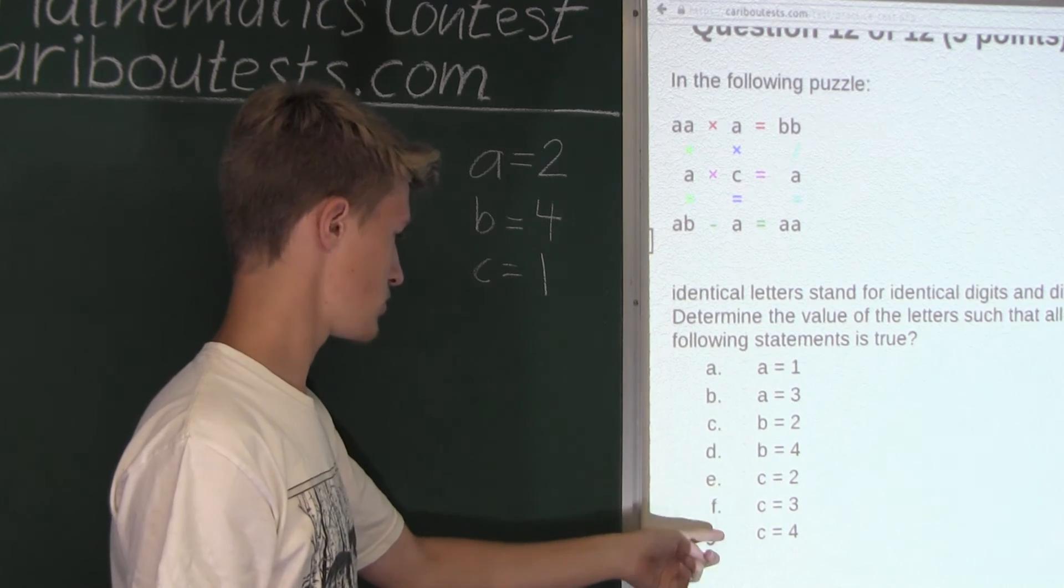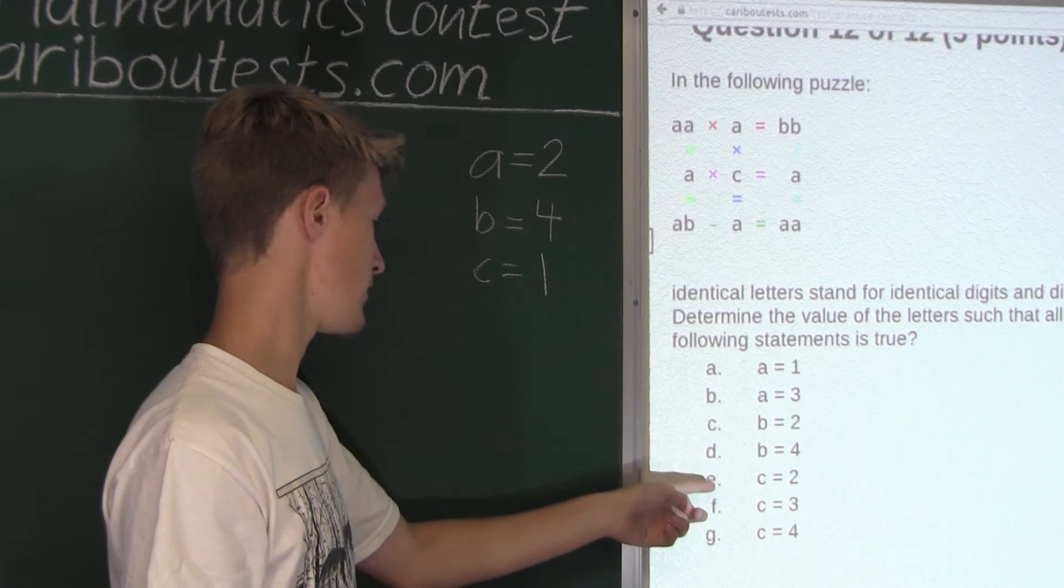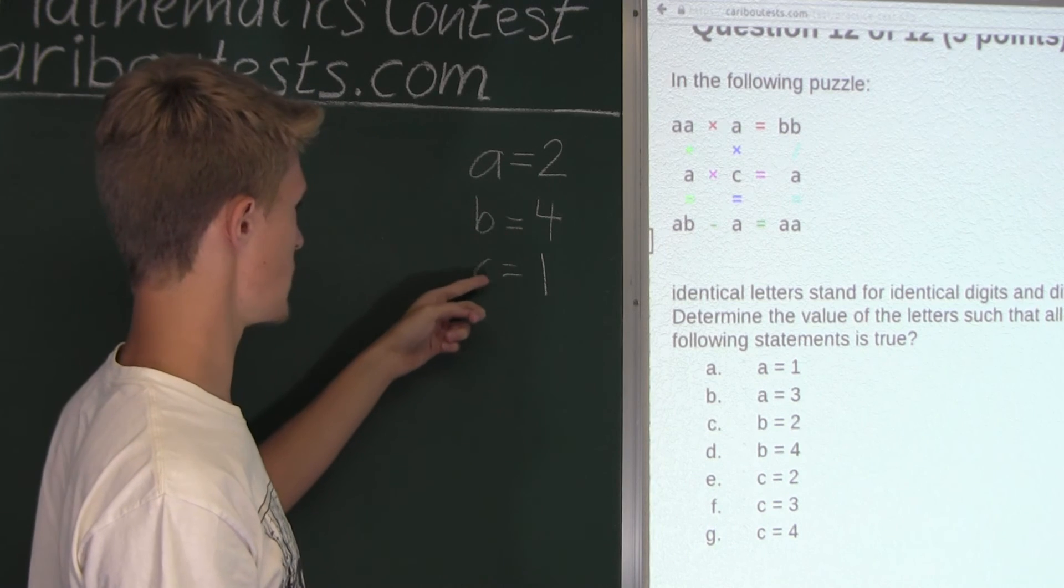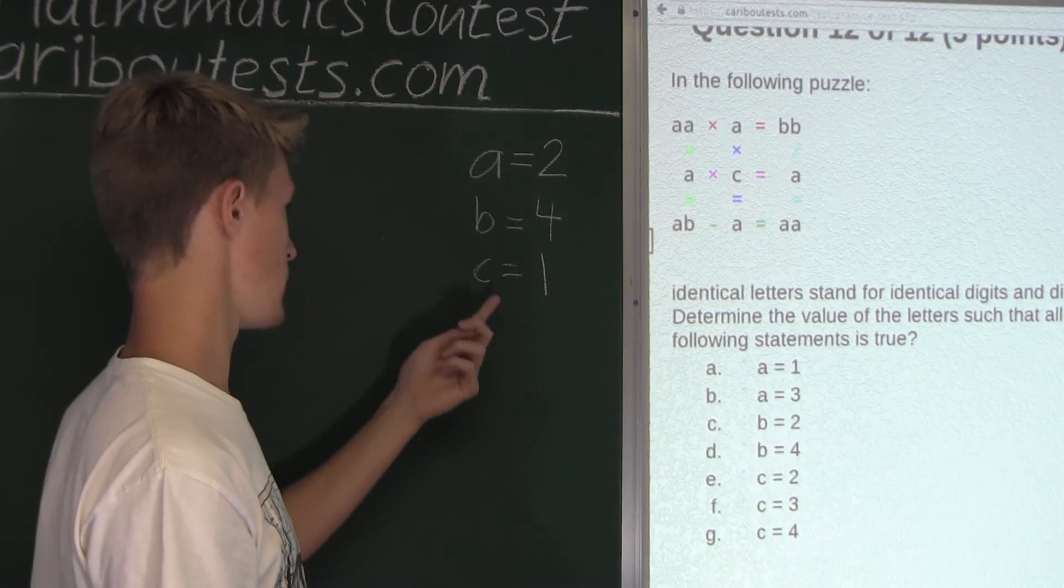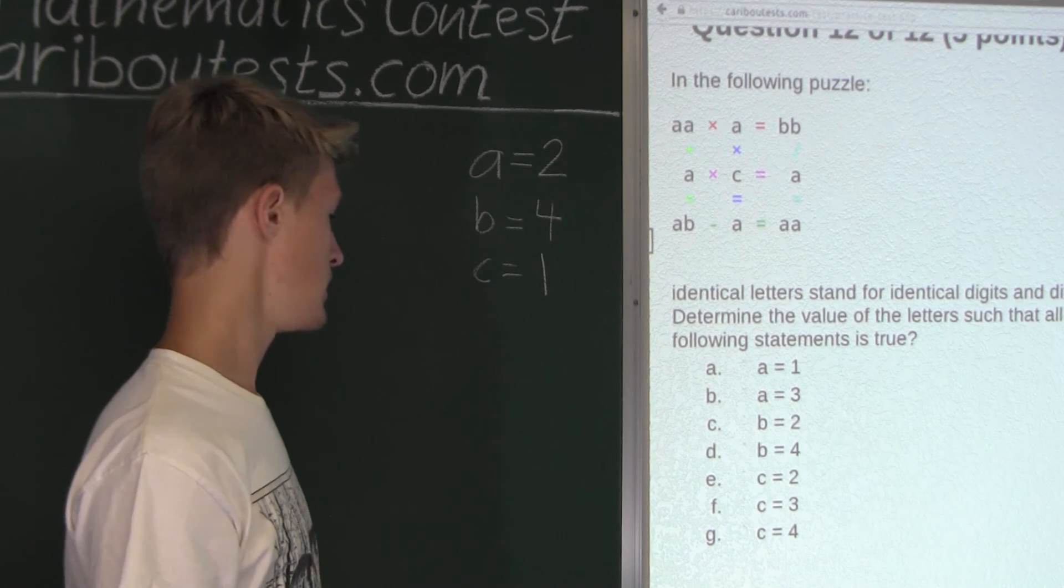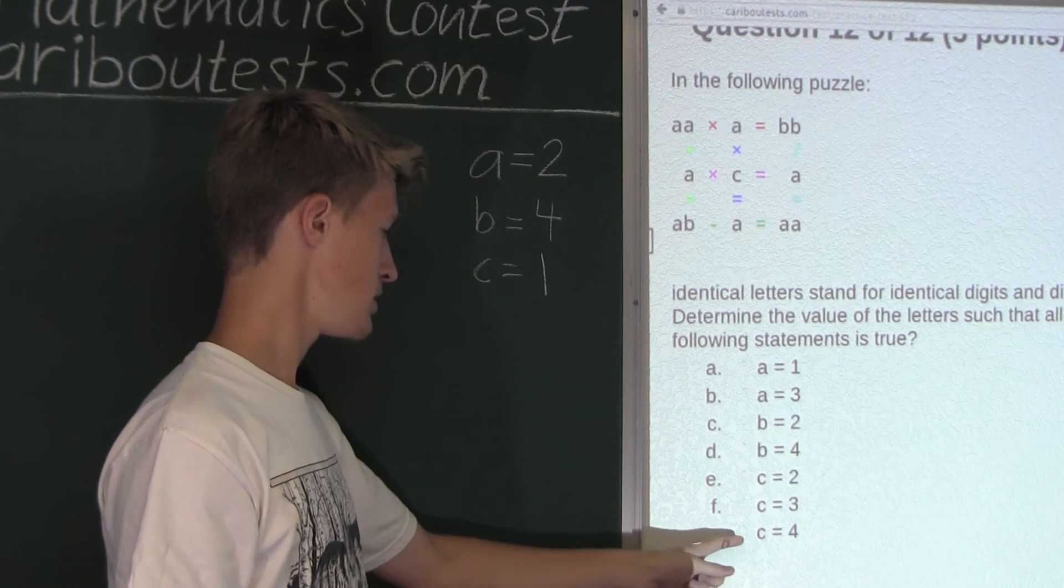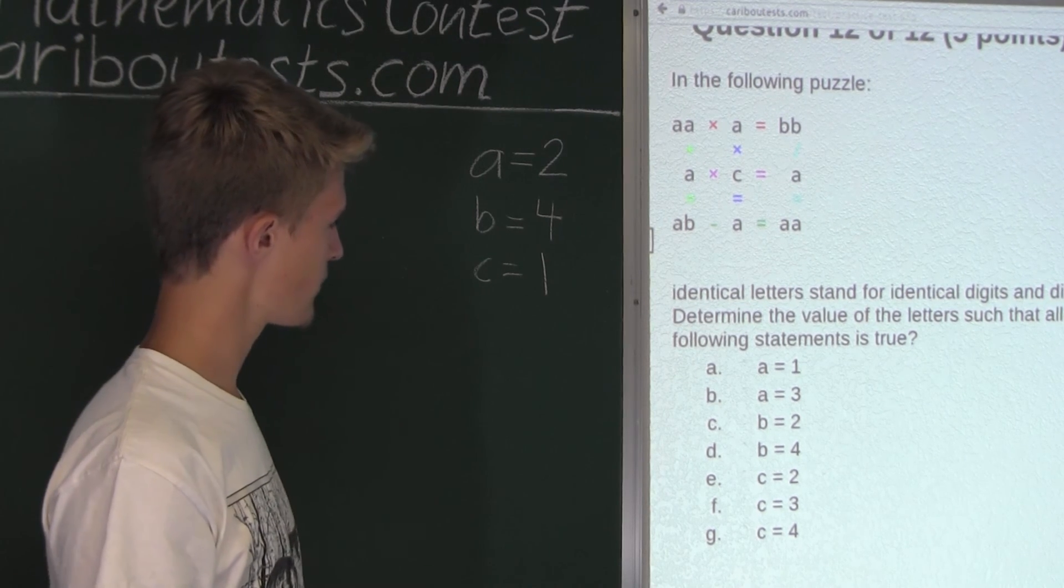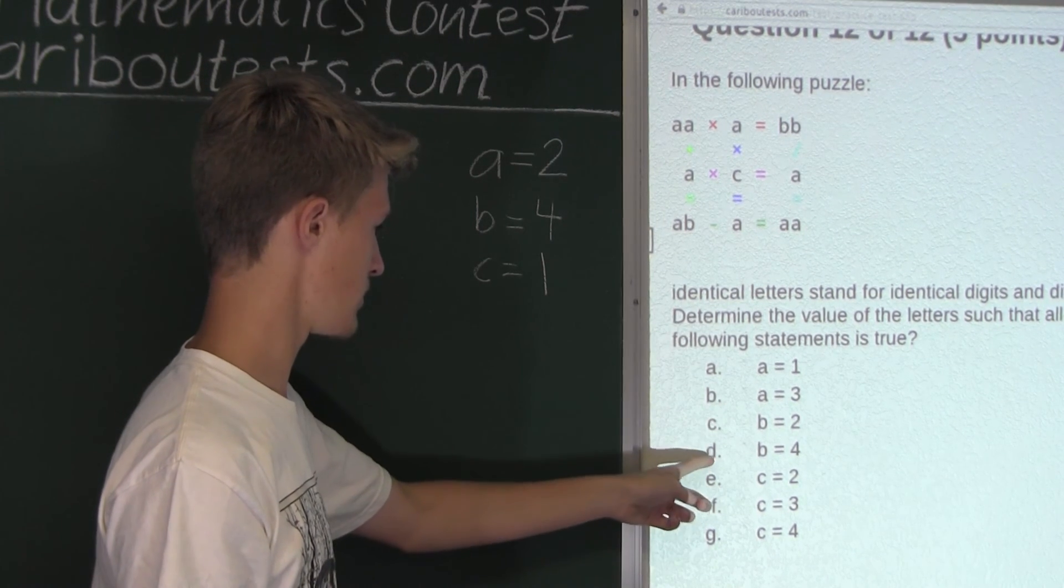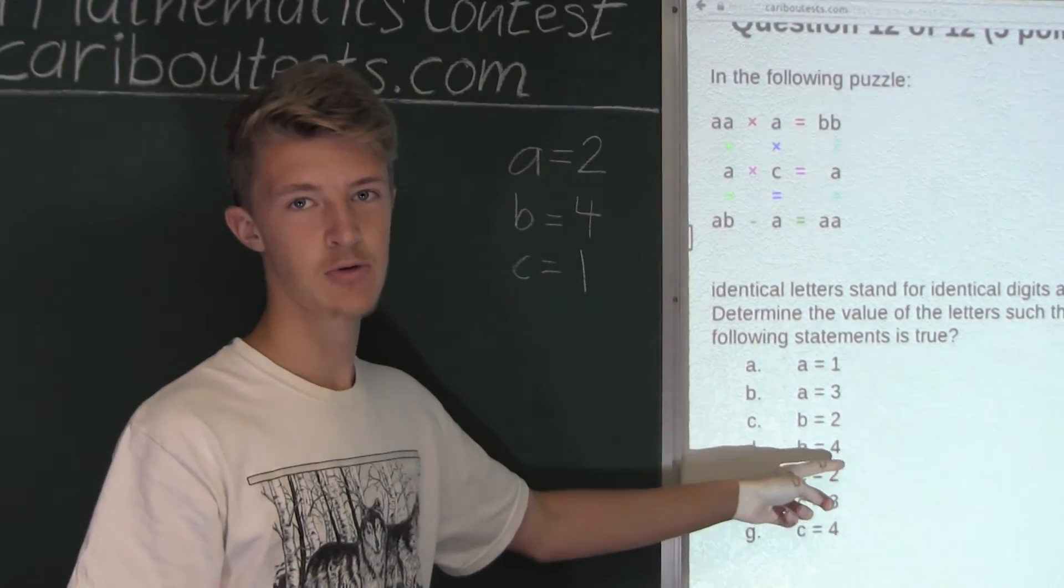And now let's just check for the other three options. We have option E, C equals to 2. No, C is equal to 1. Then option F, C equals 3. No, we know C equals 1. And finally, option G, C equals 4. No, we know C equals to 1. So therefore, the correct statement would be option D, B equals to 4.